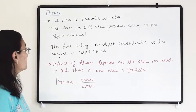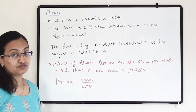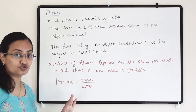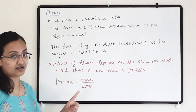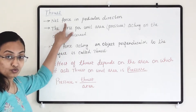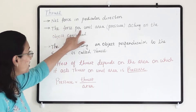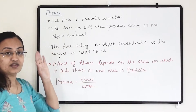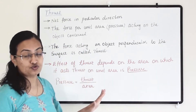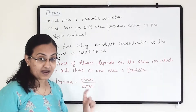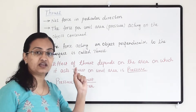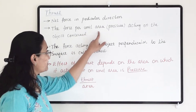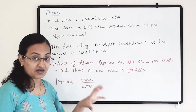So what is thirst? Net force in a particular direction is thirst. When we are applying force to any particular object in one specific direction, then it is known as thirst. The force per unit area, that is pressure, acting on the object concerned — you are applying pressure on one specific area or one specific part of an object, so that unit area is under that pressure. So that is also called thirst.